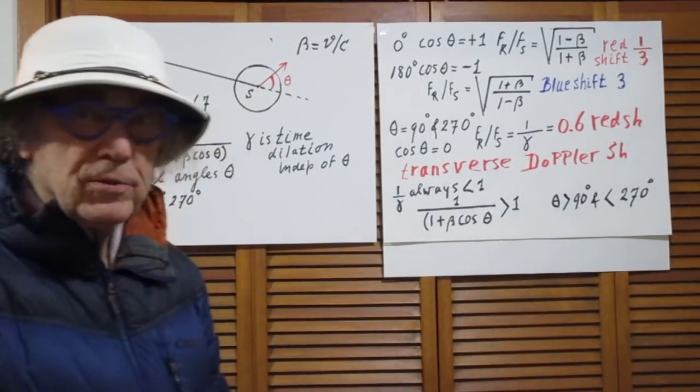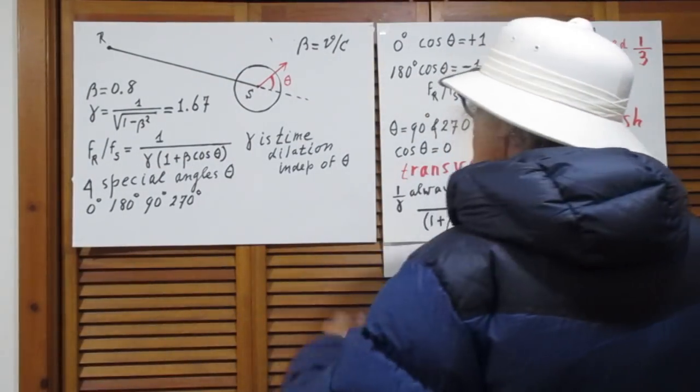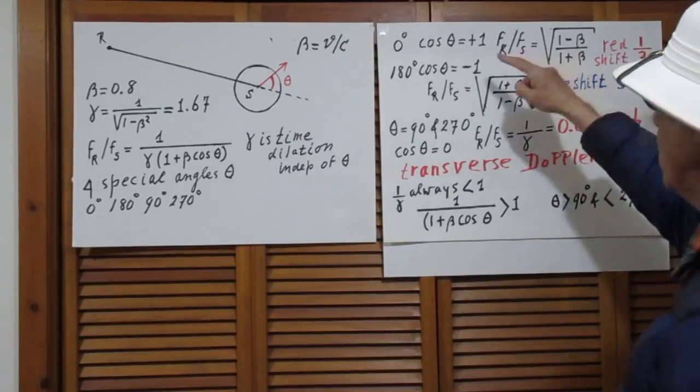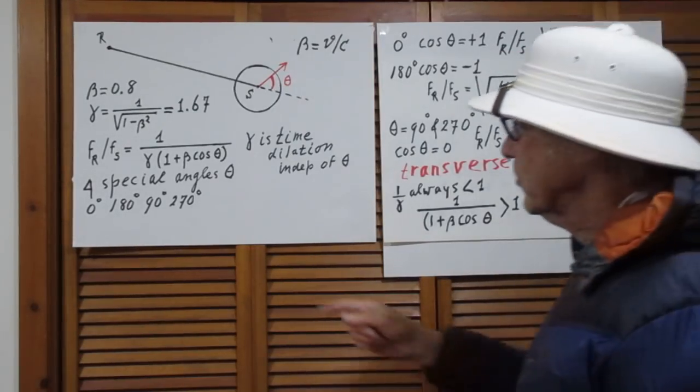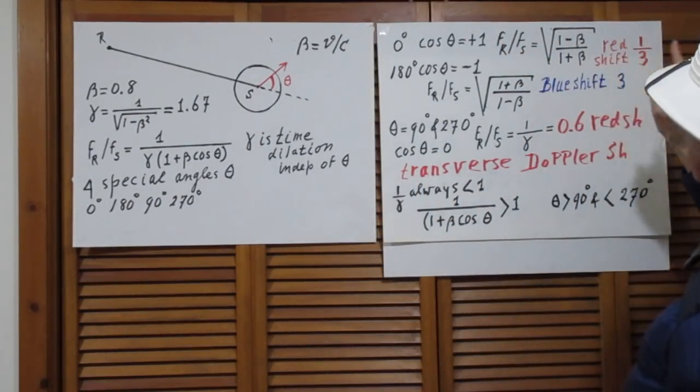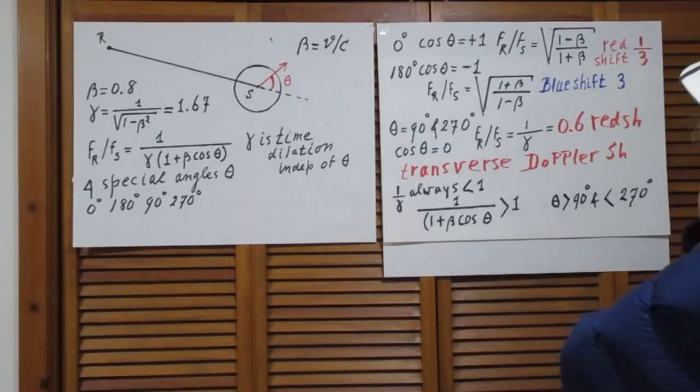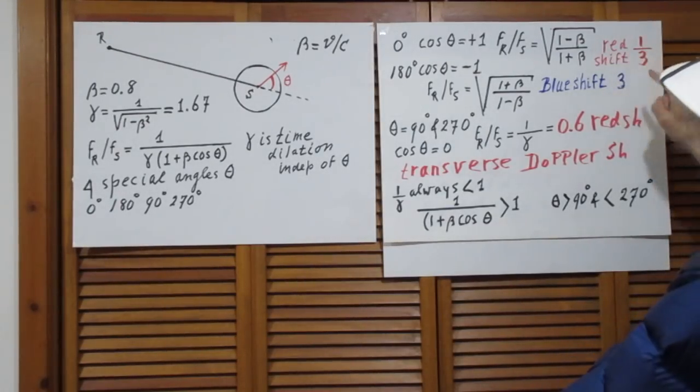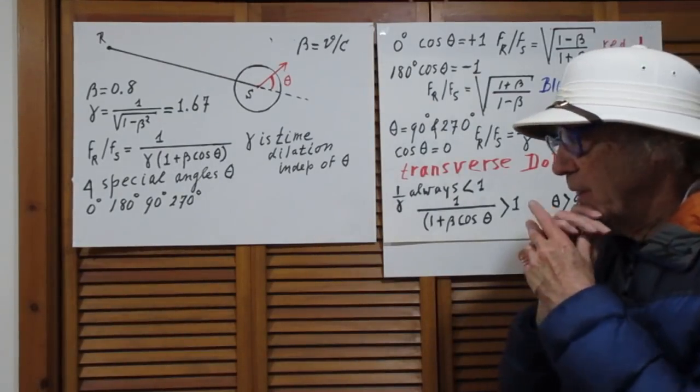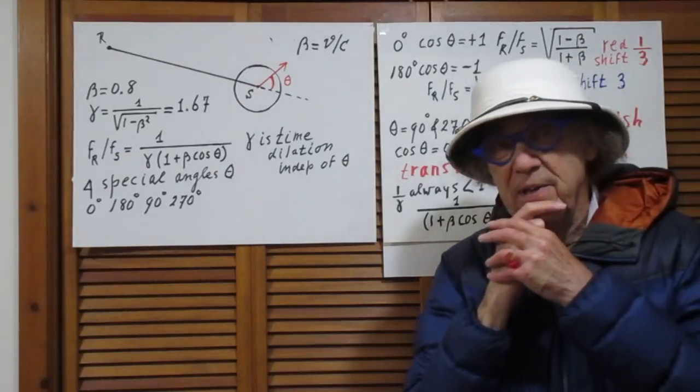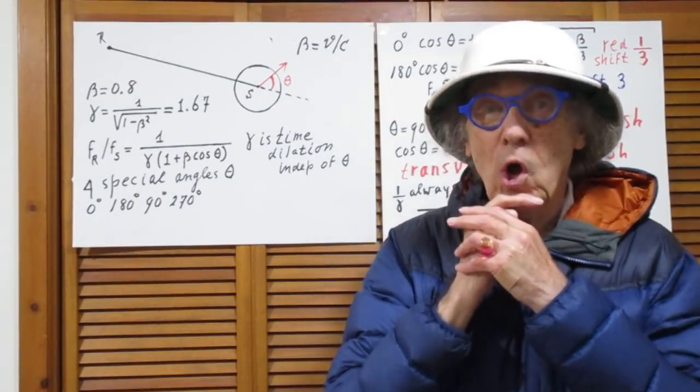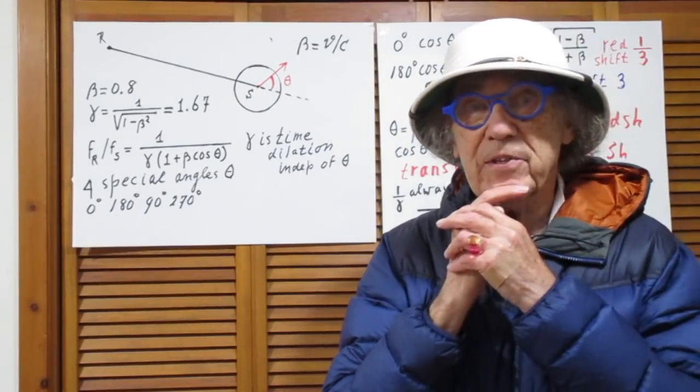Let's first go to zero degrees. The cosine of theta is then plus one, and so you can easily do the math to include the gamma. You'll find then that this ratio is the square root of one minus beta divided by one plus beta, and that in this case is one third. In other words, red shift. In other words, the frequency that you receive is three times lower than the frequency emitted by the source.